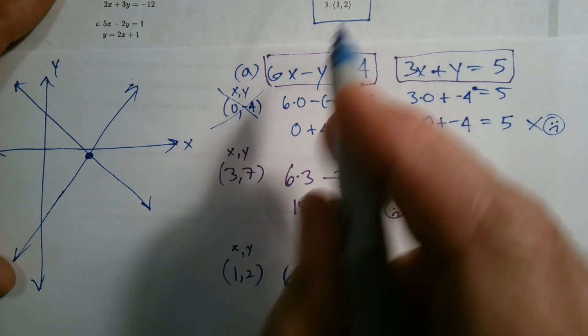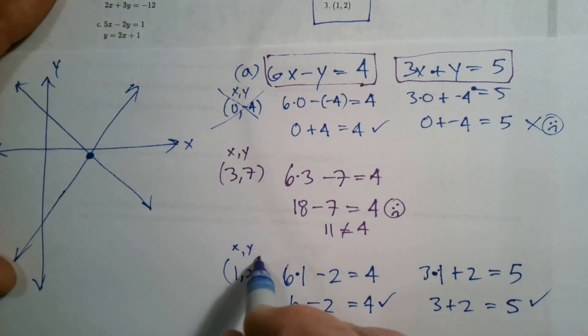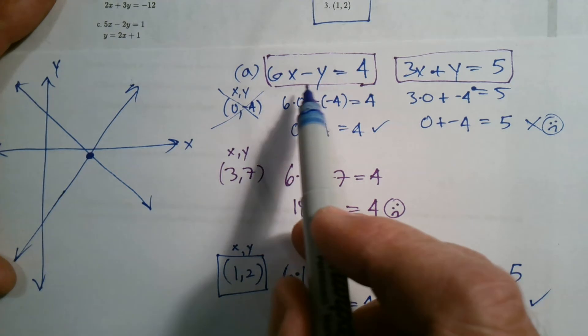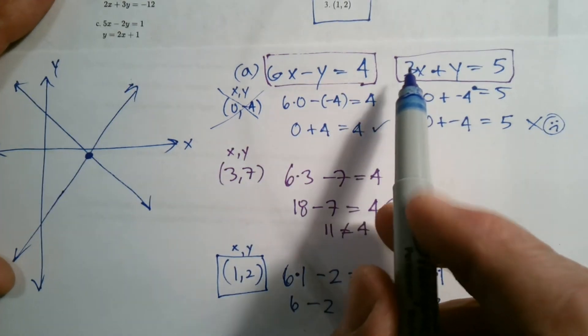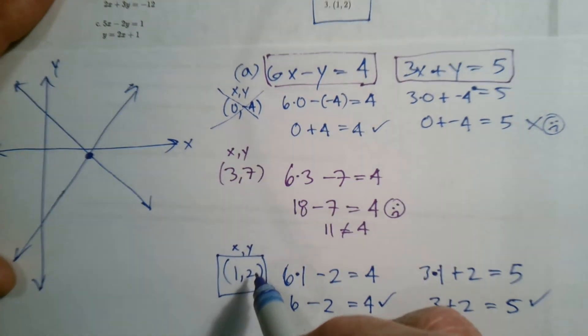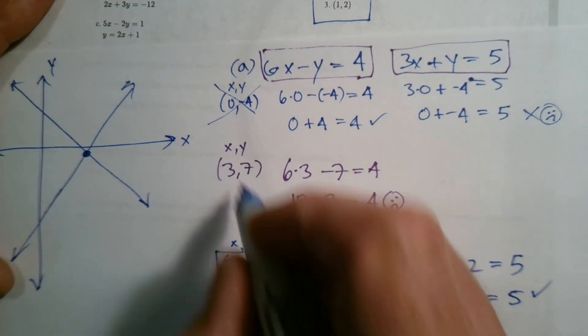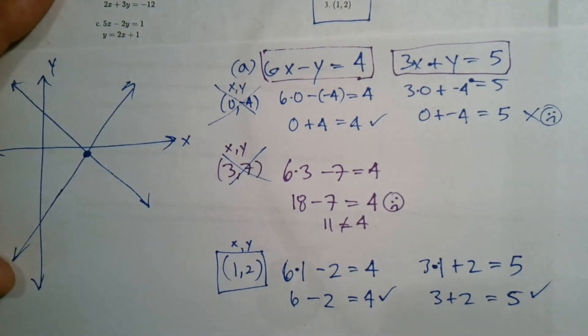Well, had to go through them all, but I figured out that this is the solution to a. So the solution to a is the 1 comma 2. So that wasn't it, that wasn't it, but that one was. So that's the process.